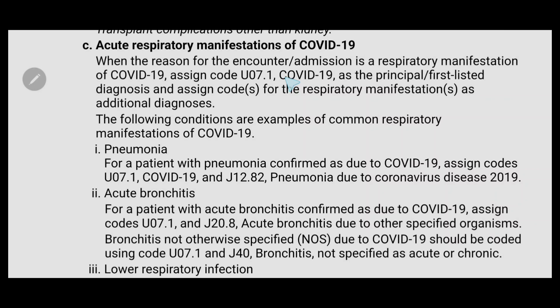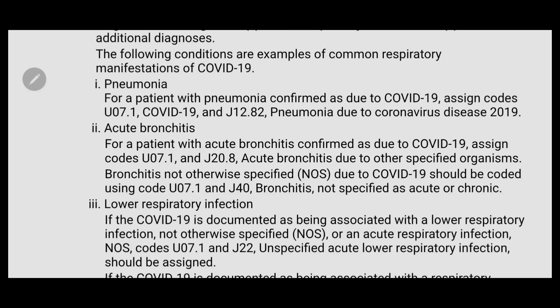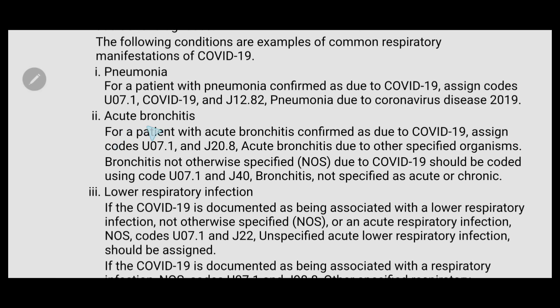For acute respiratory manifestations of COVID-19, always assign U07.1 as the principal diagnosis and the respiratory manifestation as an additional diagnosis. For pneumonia confirmed due to COVID-19, assign U07.1 and J12.82 (pneumonia due to coronavirus disease). For acute bronchitis confirmed as due to COVID-19, use U07.1 as the first code and J20.8 (acute bronchitis due to other specified organism) as the second code.